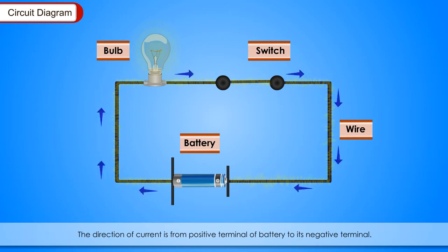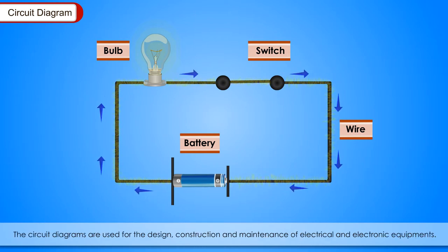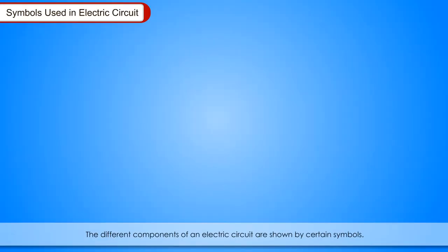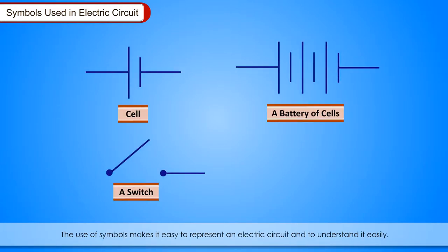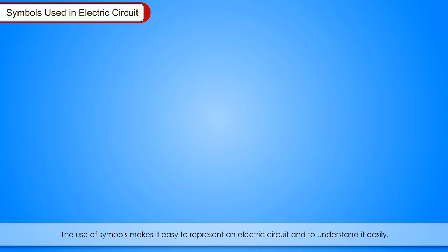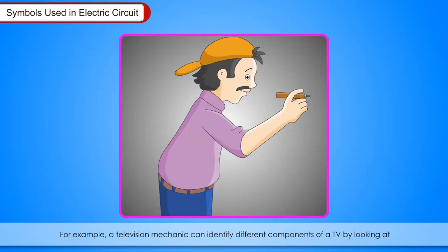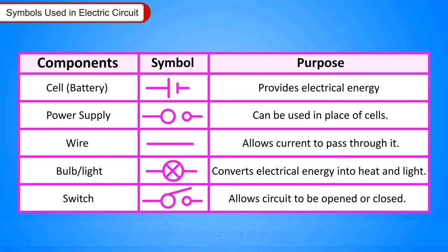The direction of current is from positive terminal of battery to its negative terminal. The circuit diagrams are used for the design, construction and maintenance of electrical and electronic equipment. Symbols used in electric circuit: The different components of an electric circuit are shown by certain symbols. The use of symbols makes it easy to represent an electric circuit and to understand it easily. For example, a television mechanic can identify different components of a TV by looking at its circuit diagram depicted with symbols.